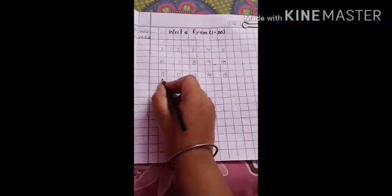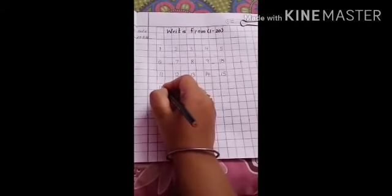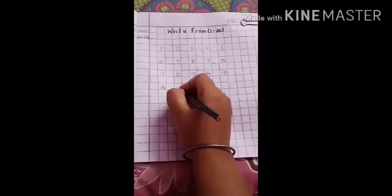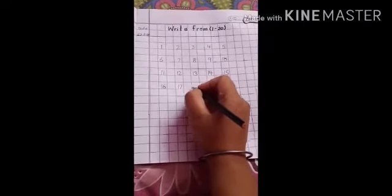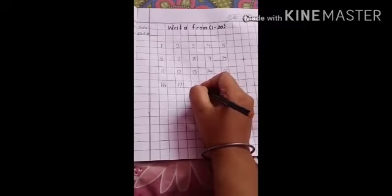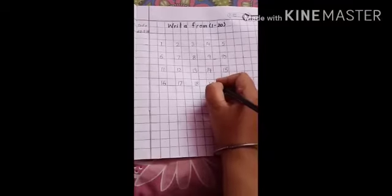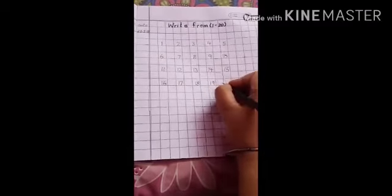Now, come down, leave one box and write 1, 6, 16. Now, again leave one box and write 1, 7, 17. What's come after 17? Yes, 1, 8, 18. What's come after 18? Yes, 1, 9, 19. What's come after 19? Yes, 2, 0, 20.